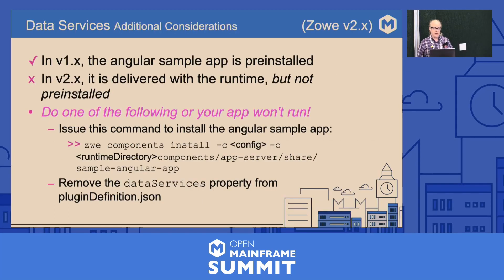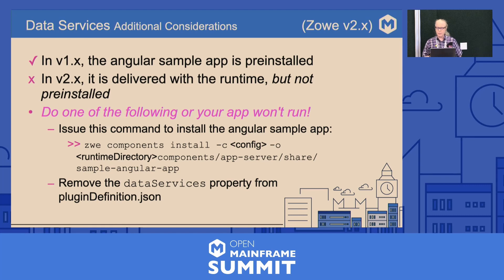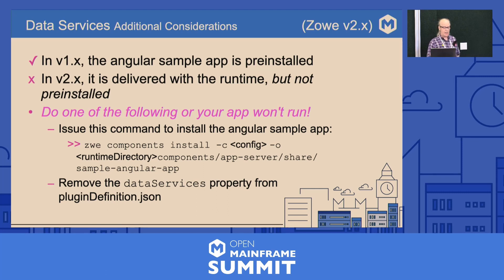Data services is an issue for version 2 — it's an additional consideration in the sample app from Zoe. Under version 1, it is pre-installed and you don't have to do anything. On version 2, it is delivered with the runtime but not pre-installed. So you have to either install it — here is the command syntax — or delete the data services property from the plug-in definition.json file. This took me days to figure out.